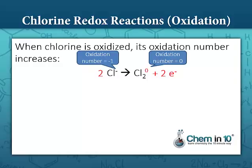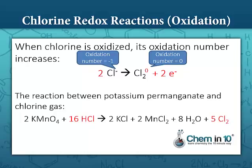Here's an example of an oxidation reaction involving chlorine. In a redox reaction where chlorine itself is oxidized, it goes from a smaller oxidation number — in this case negative one — to a larger oxidation number, in this case zero. The reaction between potassium permanganate and hydrochloric acid is an example of a redox reaction in which chlorine is oxidized. Notice how we go from hydrochloric acid, HCl, in which the oxidation number of chlorine is negative one, to chlorine gas, in which the oxidation number is zero. So in this reaction, we produce chlorine gas and chlorine is oxidized.